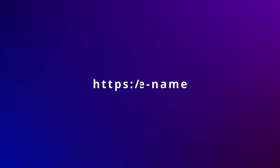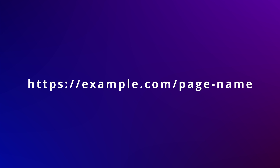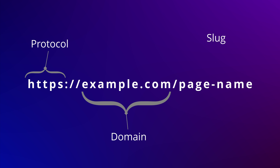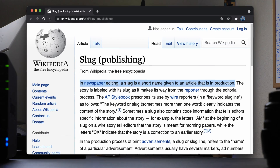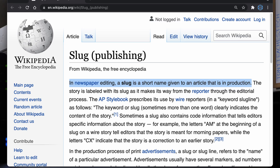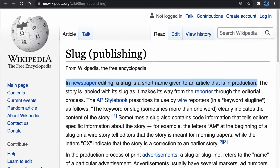In a quick side note, if we call this whole thing a URL, then this is the protocol, this is the domain name, and everything that comes after that is called the slug. The terminology "slug" actually originated from the newspaper industry as a short name given to an article that is in production. To summarize: keep a simple URL structure with human-readable words that are separated by hyphens.